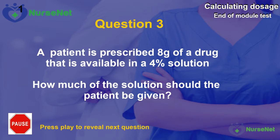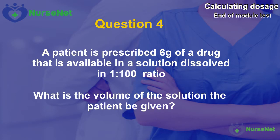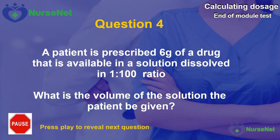Question 4. A patient is prescribed 6g of a drug that is available in a solution dissolved in a 1 to 100 ratio. What is the volume of the solution the patient should be given?